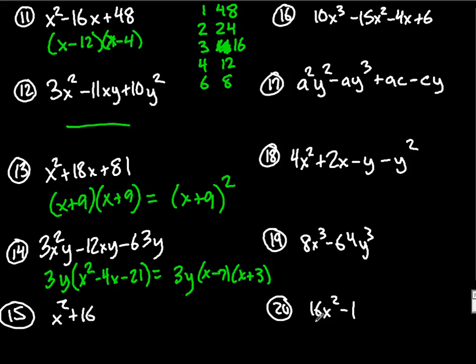Let me take 20 real quick because it's a difference of squares again. 4x and 1 for both of them. And remember, with difference of squares, one's positive, one's negative.